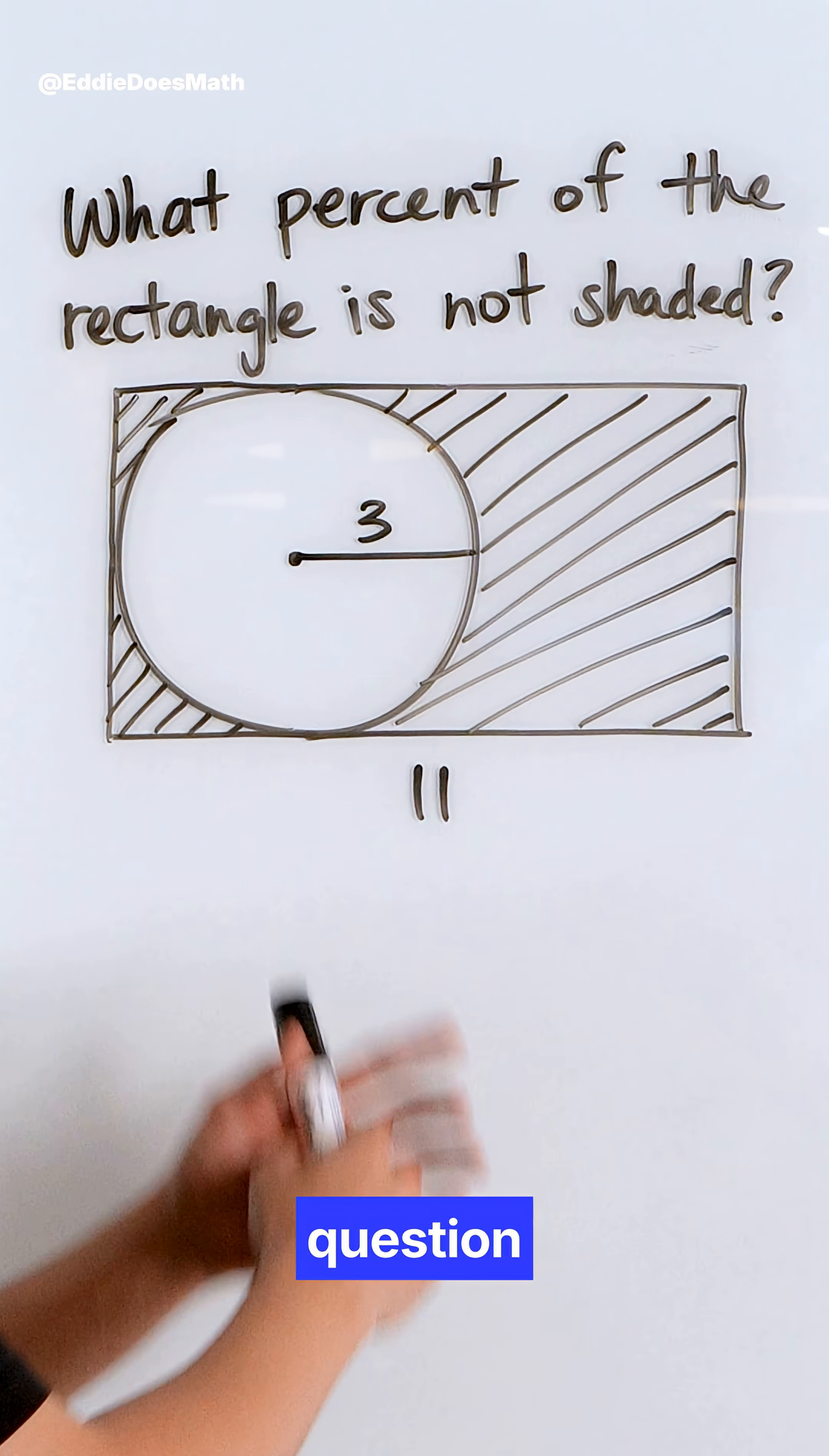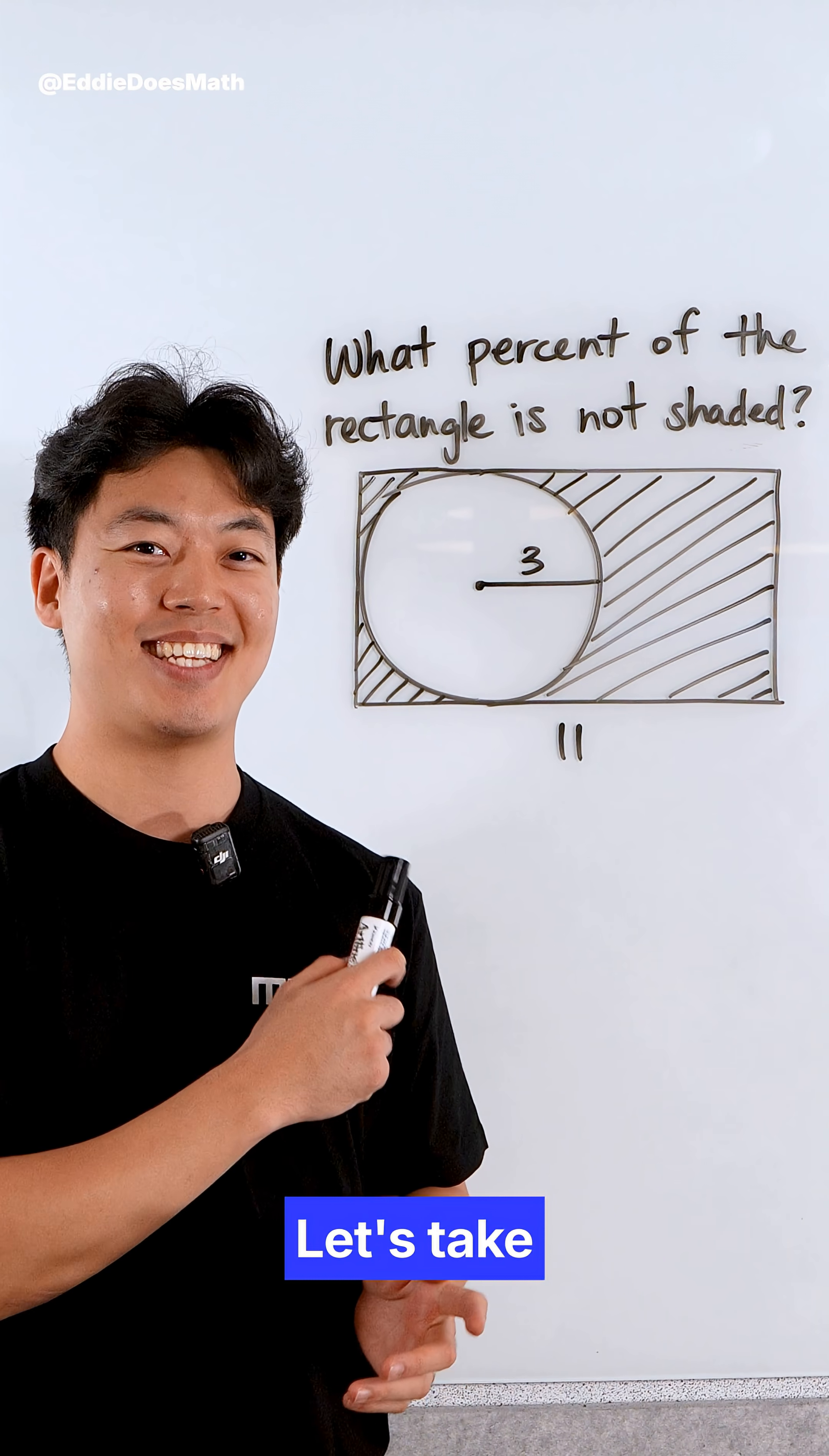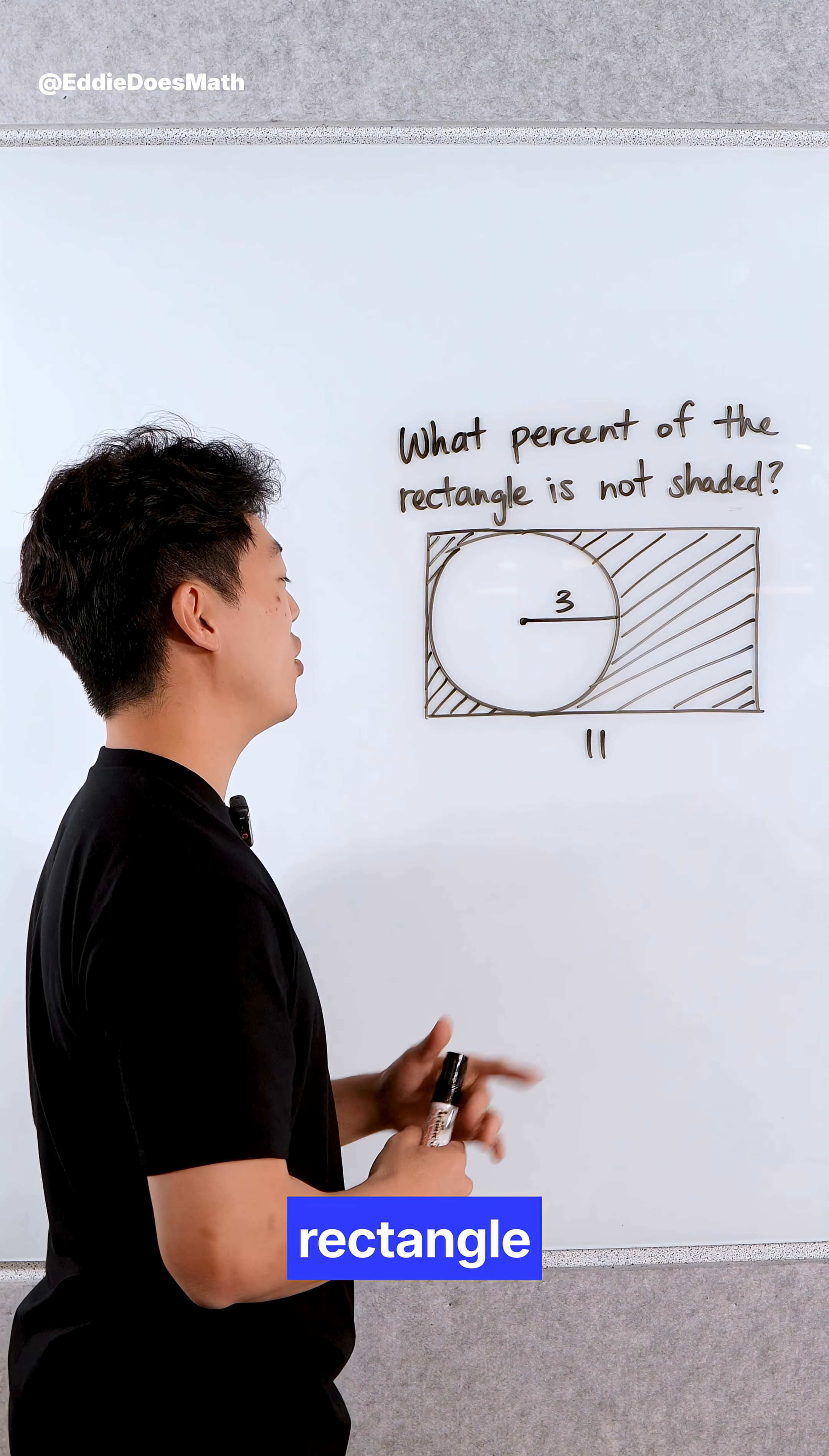99% of students got this question wrong on the SAT. Let's take a look. What percent of the rectangle is not shaded?